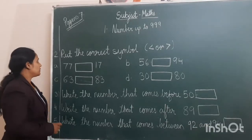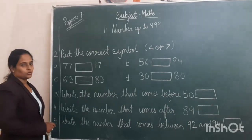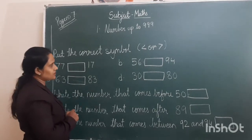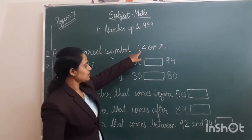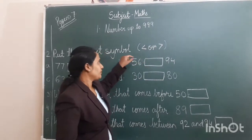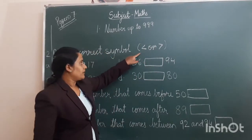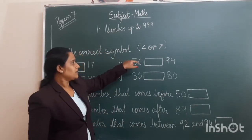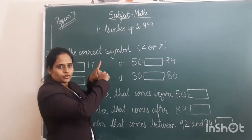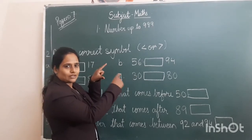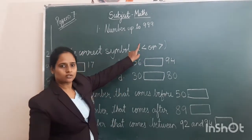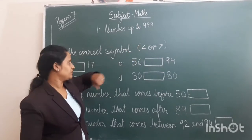Now we come to question number 2: put the correct symbol. This is the symbol of greater and smaller. Whenever the greater number is there, the open side of the mouth sign will come towards that number, and the closed side will be for the smaller number.